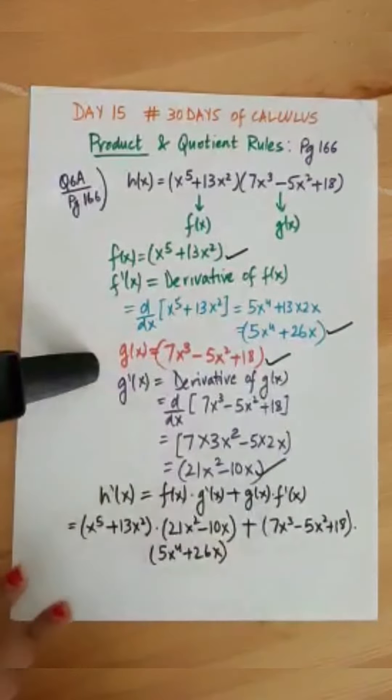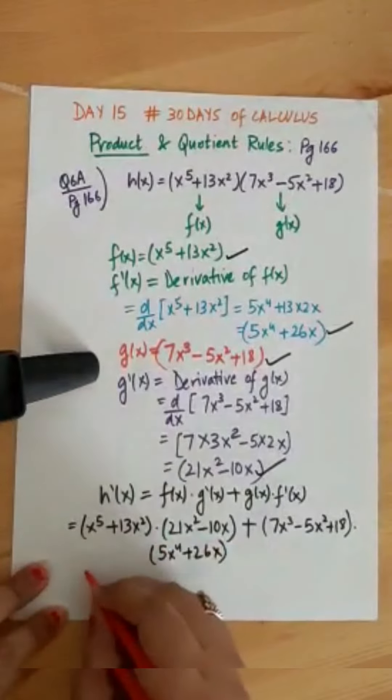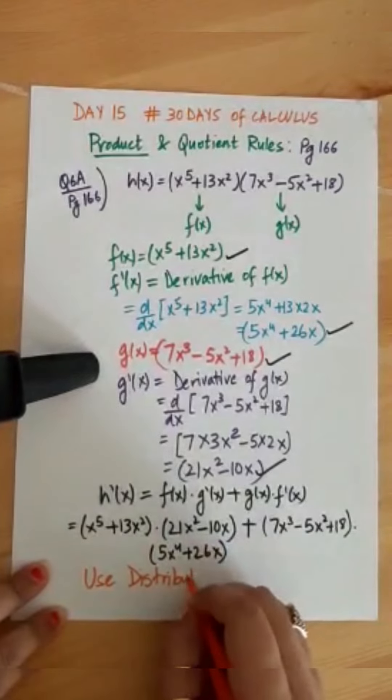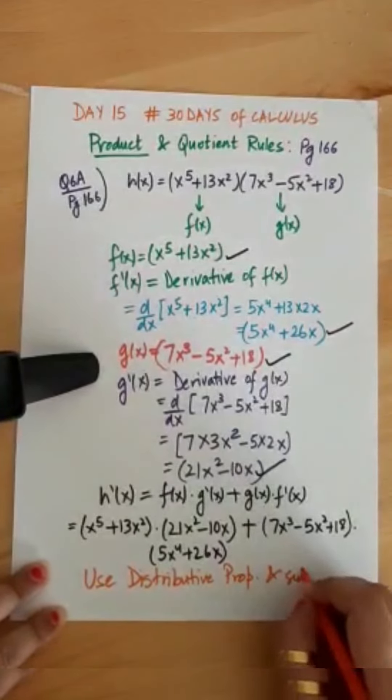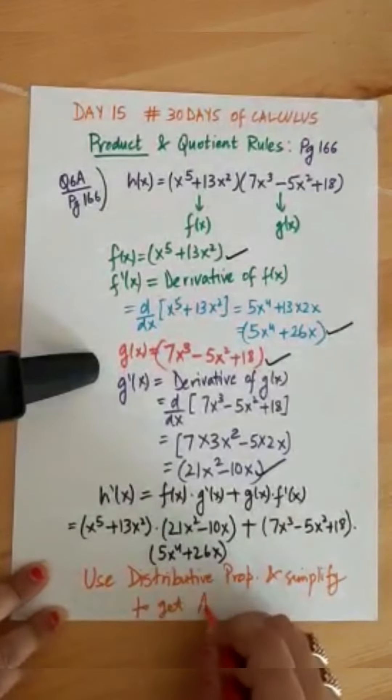Now you can solve this, multiply using distributive property, collect the like terms and use the distributive property to get your final answer. So this was how you use product rule for finding the derivative of product functions.